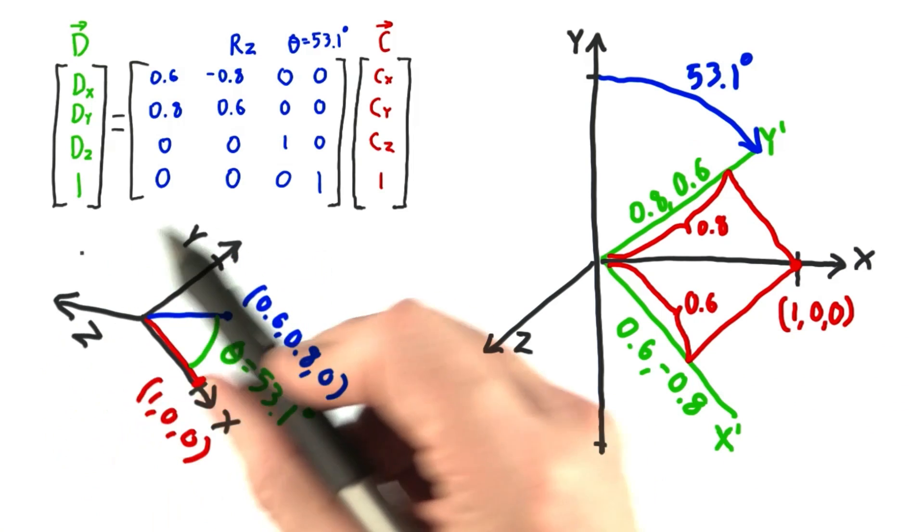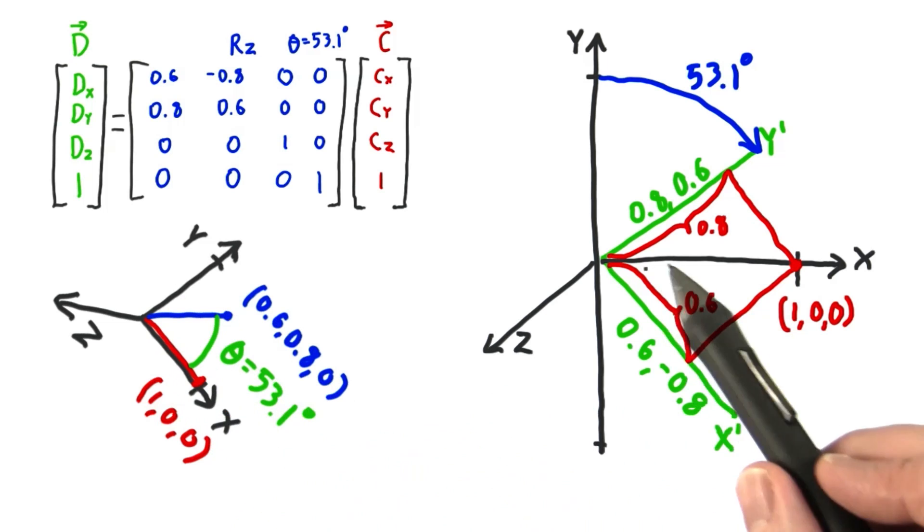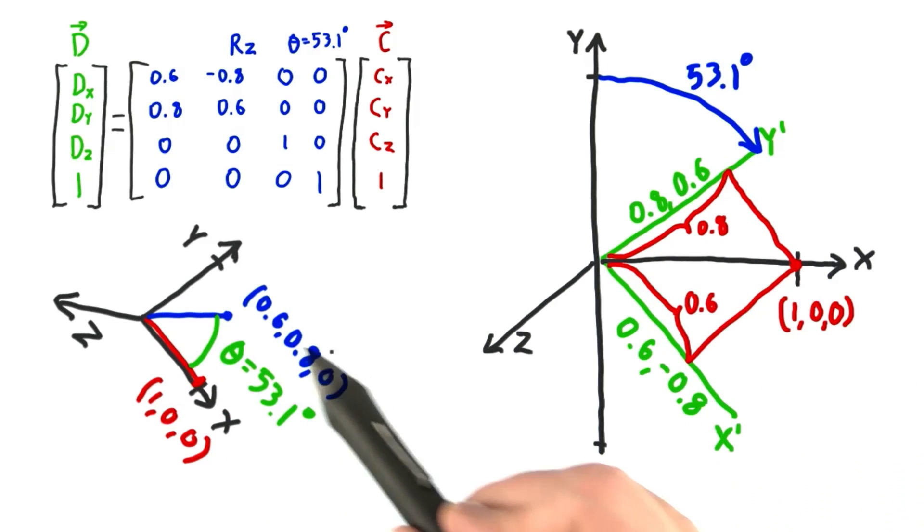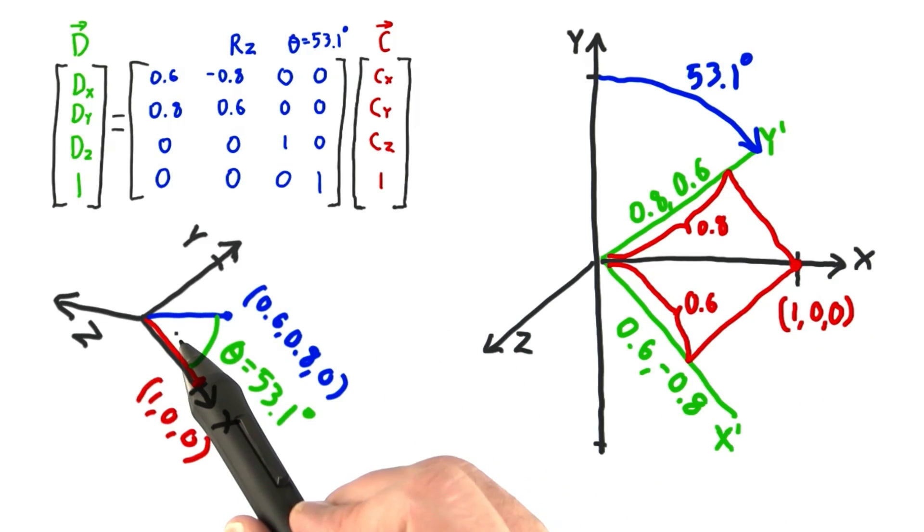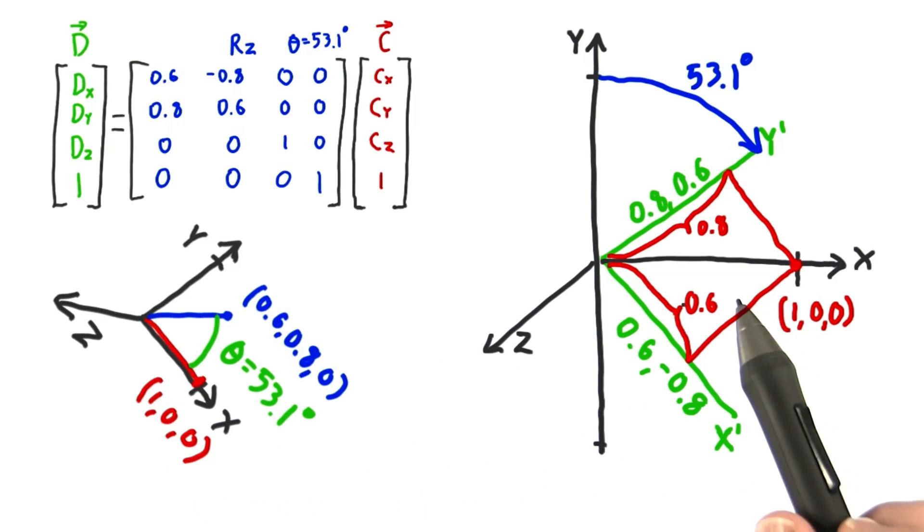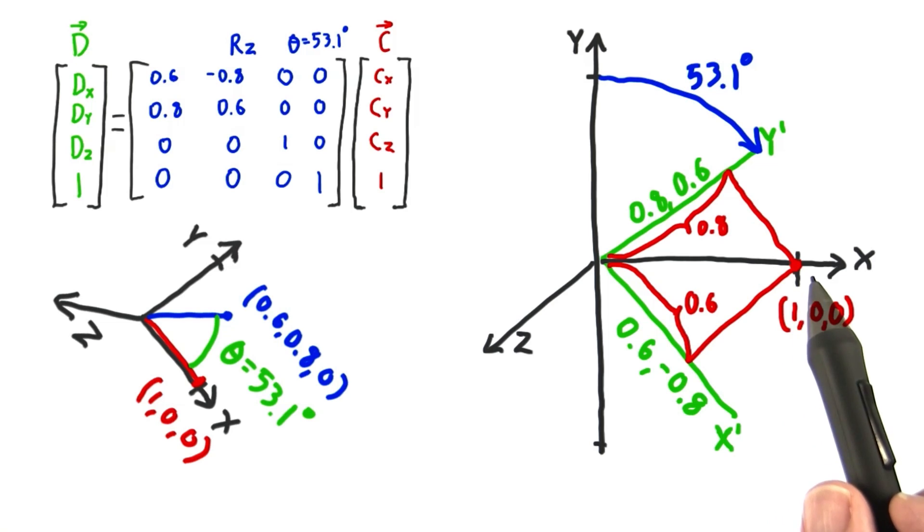If we rotate the first interpretation so that the x and y axes are aligned with the second, we see that the transformed point is in the same orientation to the axes in both cases. This second interpretation is the one that helped me understand how a dot product is rotating a point.